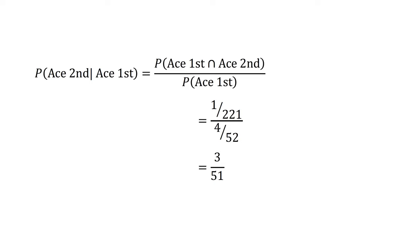As a test of this formula, let's take our previous example of drawing two aces from the same deck. What is the probability of drawing an ace on the second draw if you drew an ace on the first? p(ace on second | ace on first) = p(ace on first and ace on second) / p(ace on first) = (1/221) / (4/52) = 3/51.